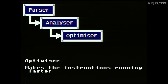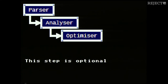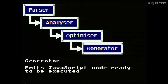Then we have the optimiser — as the name implies, it makes sure the code runs as fast as possible. However, this step is purely optional and we can remove it and the compiler will still run normally. And at the end, what we need is JavaScript code, and this is the role of the generator.